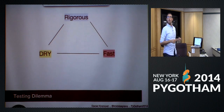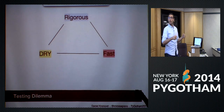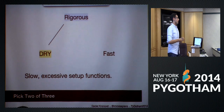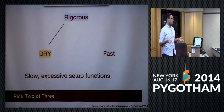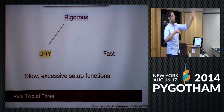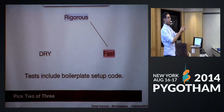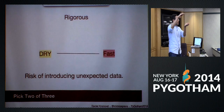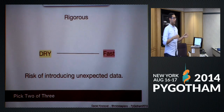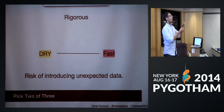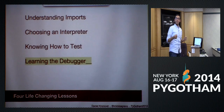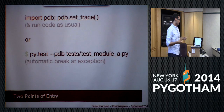There's a dilemma when writing tests: you want them to be rigorous, dry, and fast — but you can't always have all three. If they're rigorous and dry, they'll be slow because you'll have big setup functions. If they're rigorous but fast, they won't be dry — you'll write exactly what each test needs but with a lot of repeated code. And if they're dry and fast, you end up with one big test with many assertions, which risks unexpected data leaking between assertions — especially when testing a database.